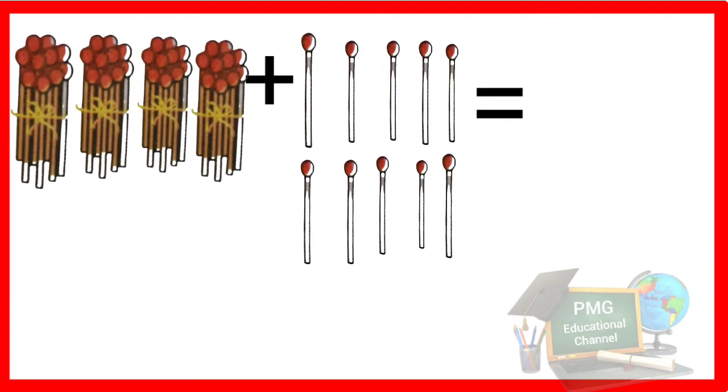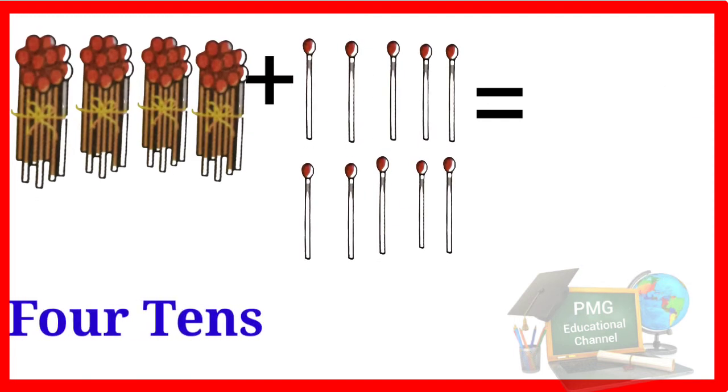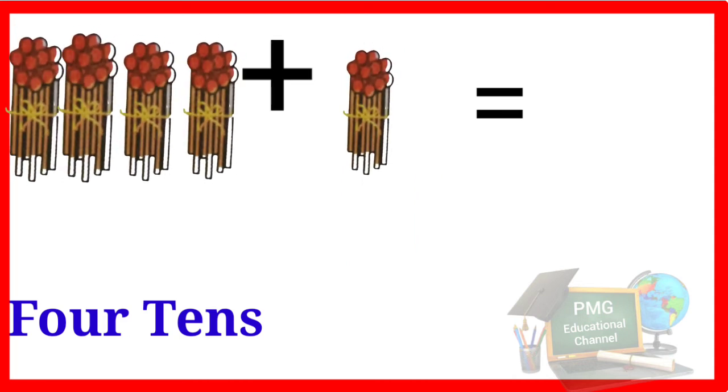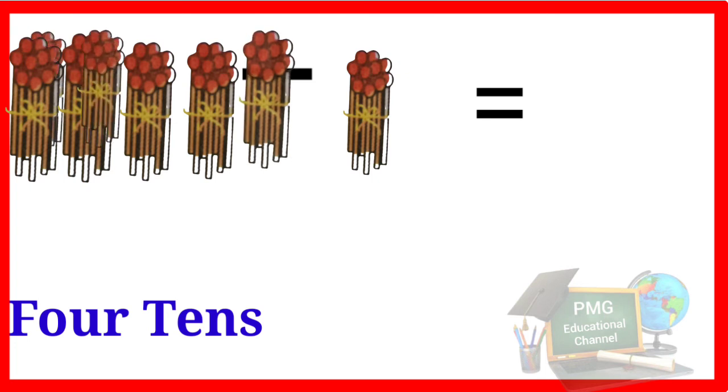Here is four tens. Look at these carefully, here is ten units. Now we will make a bunch of these ten units, so one bunch here is one ten. So four tens plus this next one ten becomes five tens.